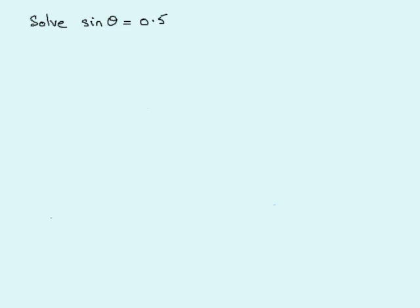OK, welcome to this tutorial on how to solve a trigger equation. The example I'm going to do now is one that involves the sine of an angle, theta in this case, equals a positive value, 0.5.